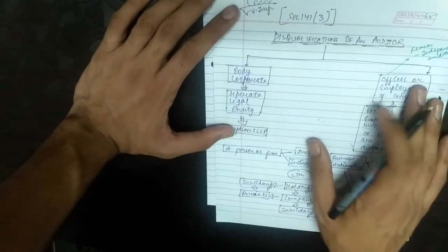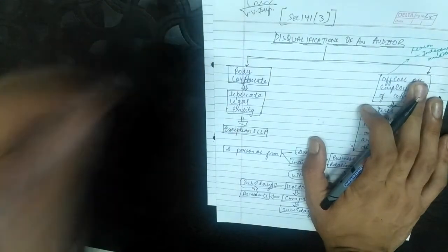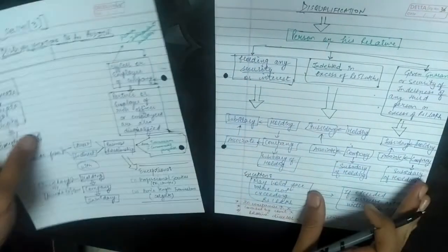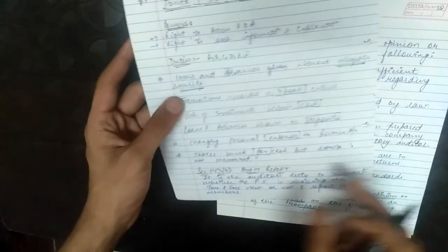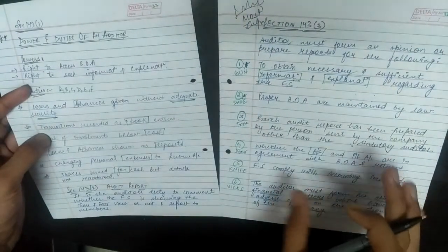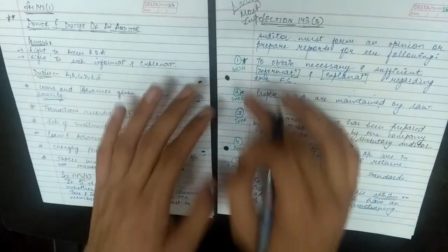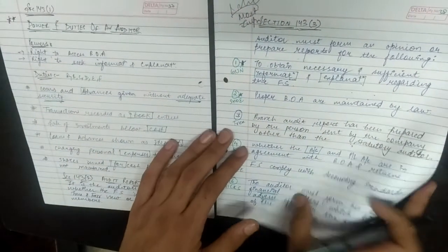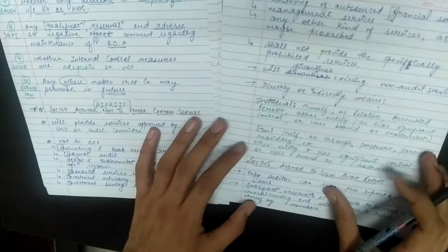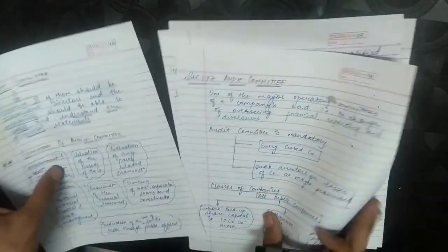The most important topic remaining is Section 141 subsection 3 — disqualification of an auditor — which will be covered in the second part of this video. Powers and duties of an auditor and the audit report under Section 143(3) have already been covered in separate videos, with links provided in the description. Auditor not to render certain services, signing the audit report, and the audit committee have also been covered. The remaining topics are disqualification of auditor, cost audit, and secretarial audit.